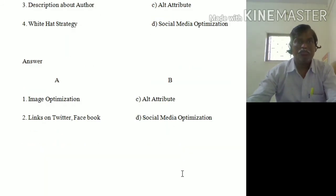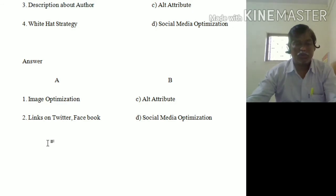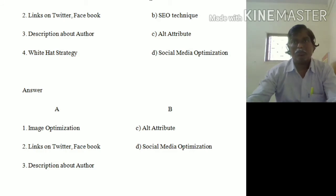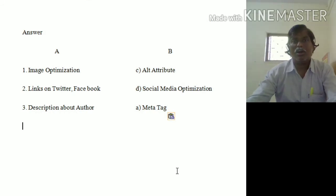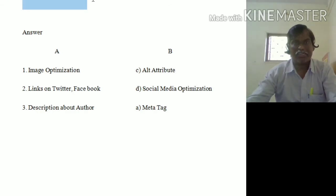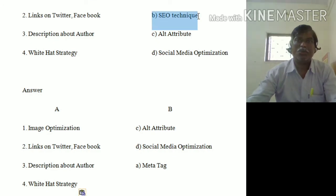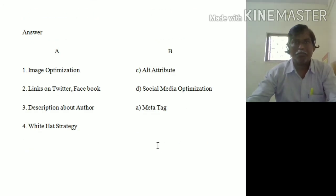Third one — description about author. As we know from the first chapter, meta tag is used for describing the author. And the last one — white hat strategy — white hat strategy is the SEO technique, so the answer is B.